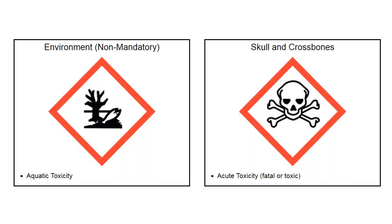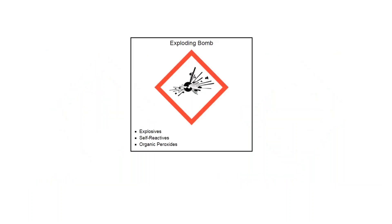The environment symbol is non-mandatory. It gives information about appropriate disposal of a product or chemical. In certain states such as California, this can be very important. The skull and crossbones indicates chemicals that have acute toxicity and are fatal or toxic if ingested, inhaled, or absorbed through the skin. The exploding bomb includes explosives, self-reactive chemicals, and organic peroxides.